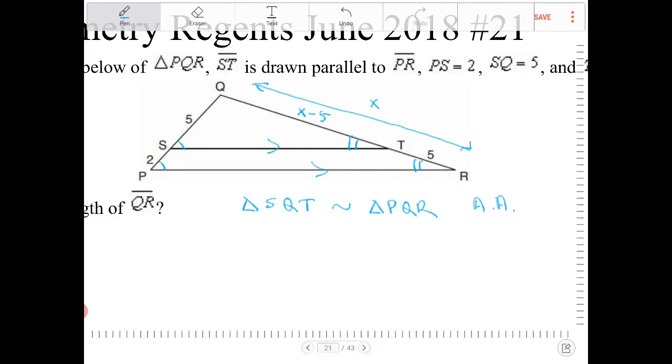So I can say SQ, which is the length of 5, over PQ, which is a length of 7, is equal to, from the smaller triangle to the right side of the smaller triangle, which is X minus 5, over the entire length of the right side, which is X.